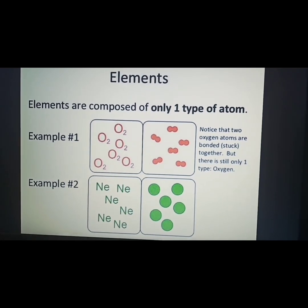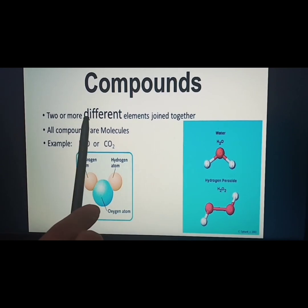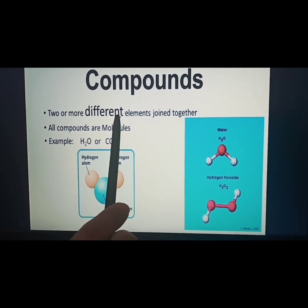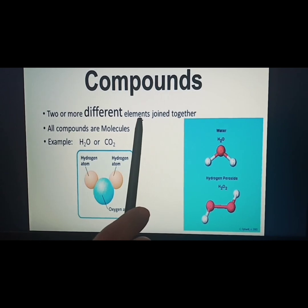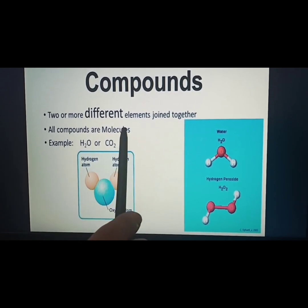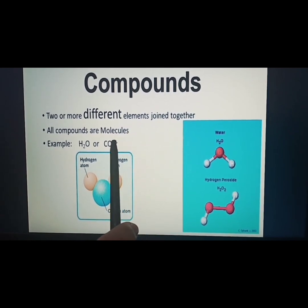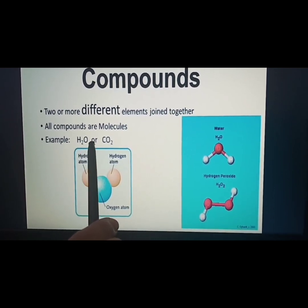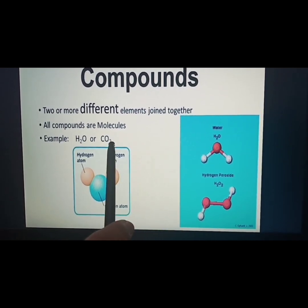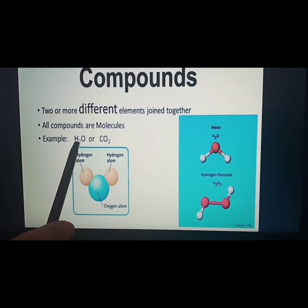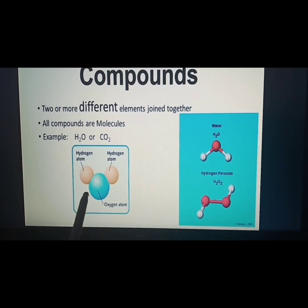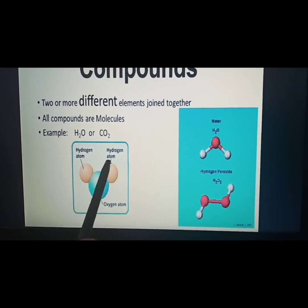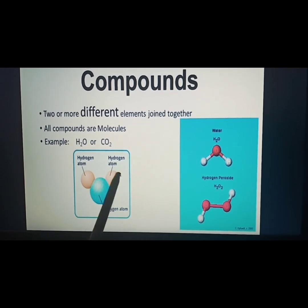Next are compounds. What are compounds? Two or more different elements joined together form compounds. All compounds are molecules. For example, H2O is a compound and can also be called a molecule. Carbon dioxide is a compound and can also be called a molecule. In H2O, two hydrogen atoms and one oxygen atom — two different elements — combine together to form the molecule water.